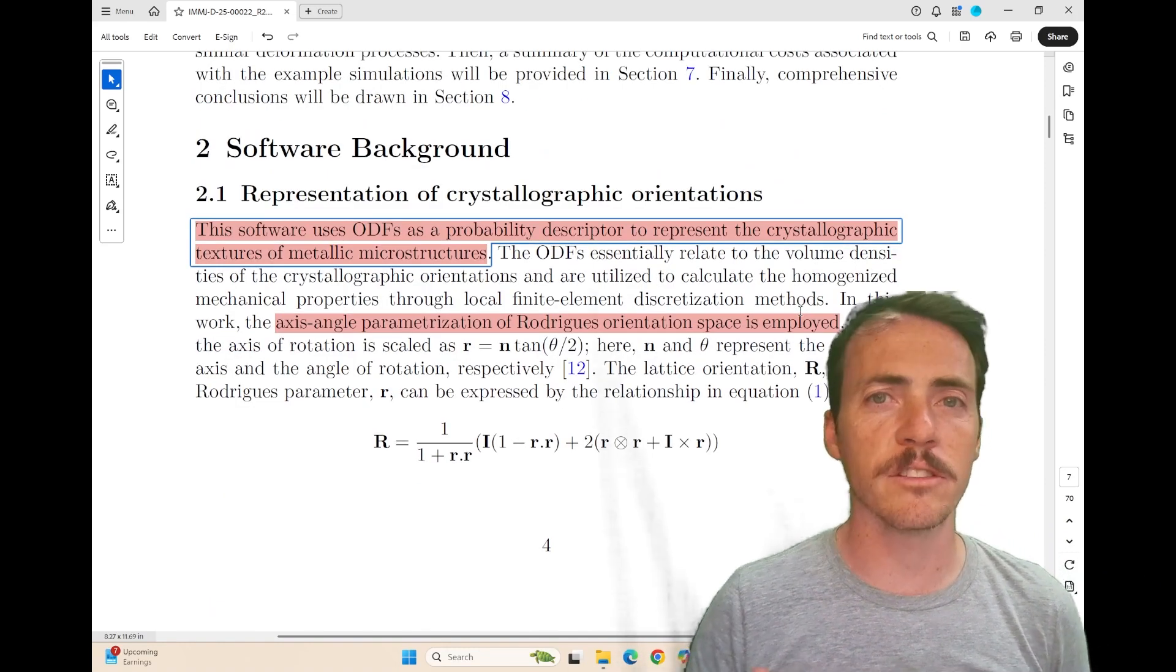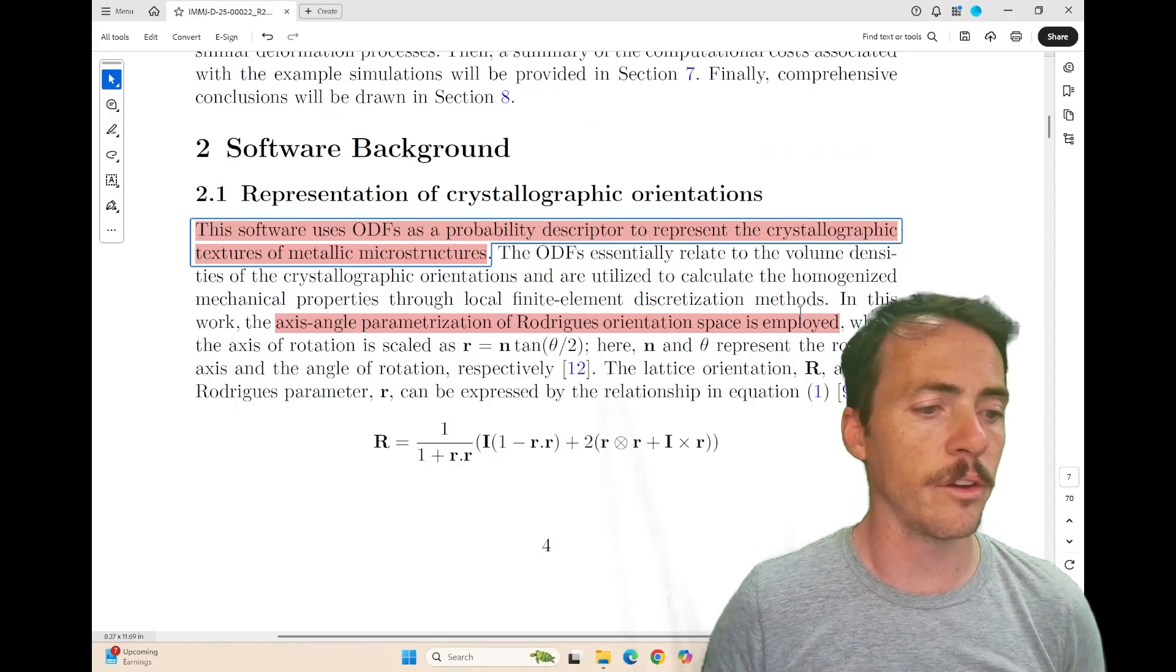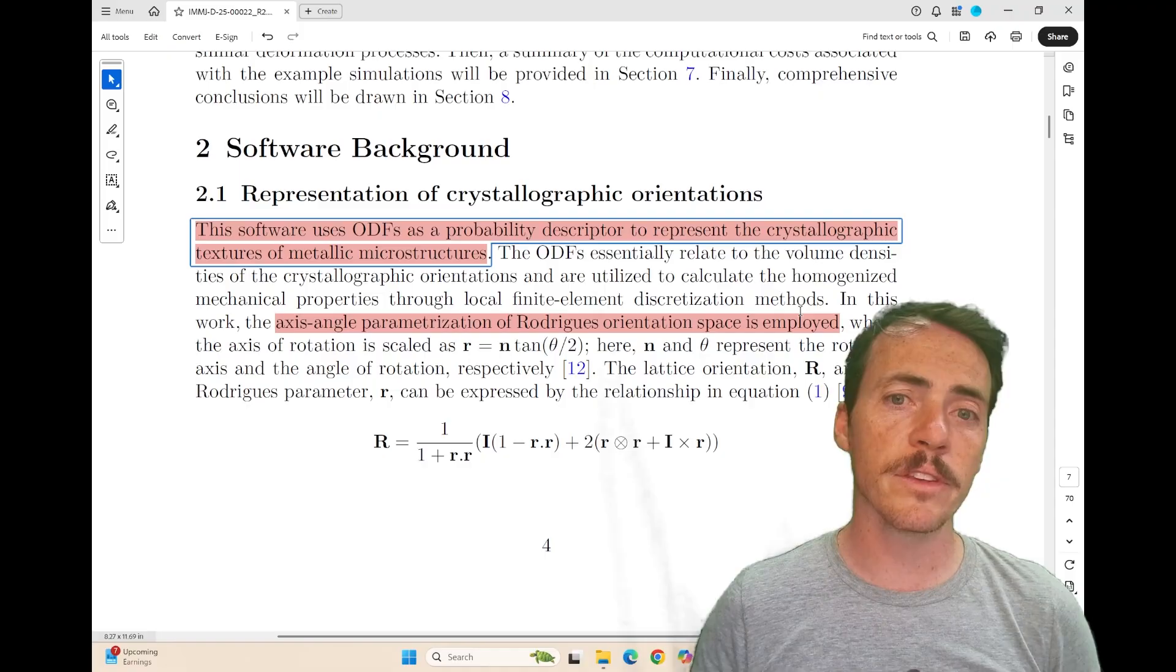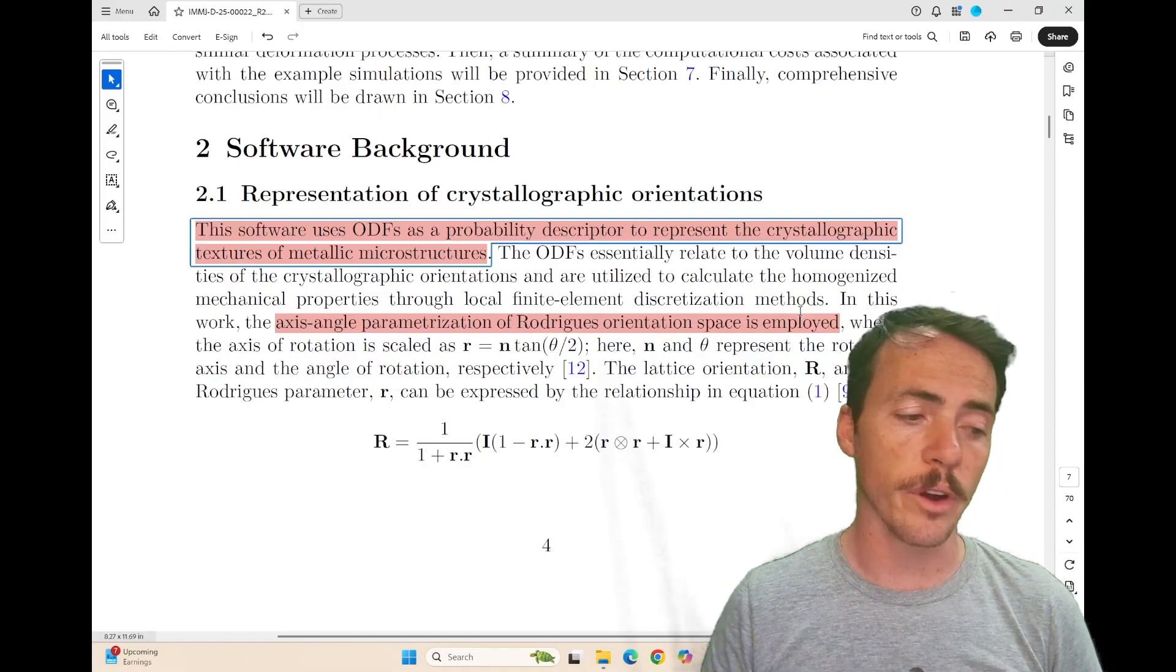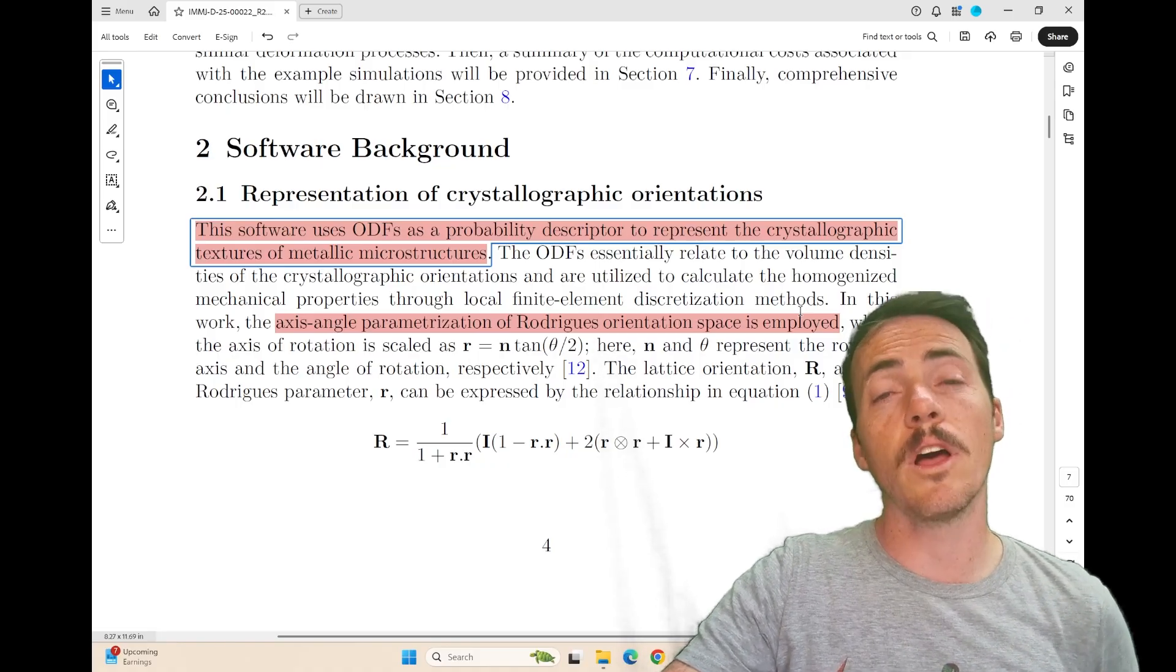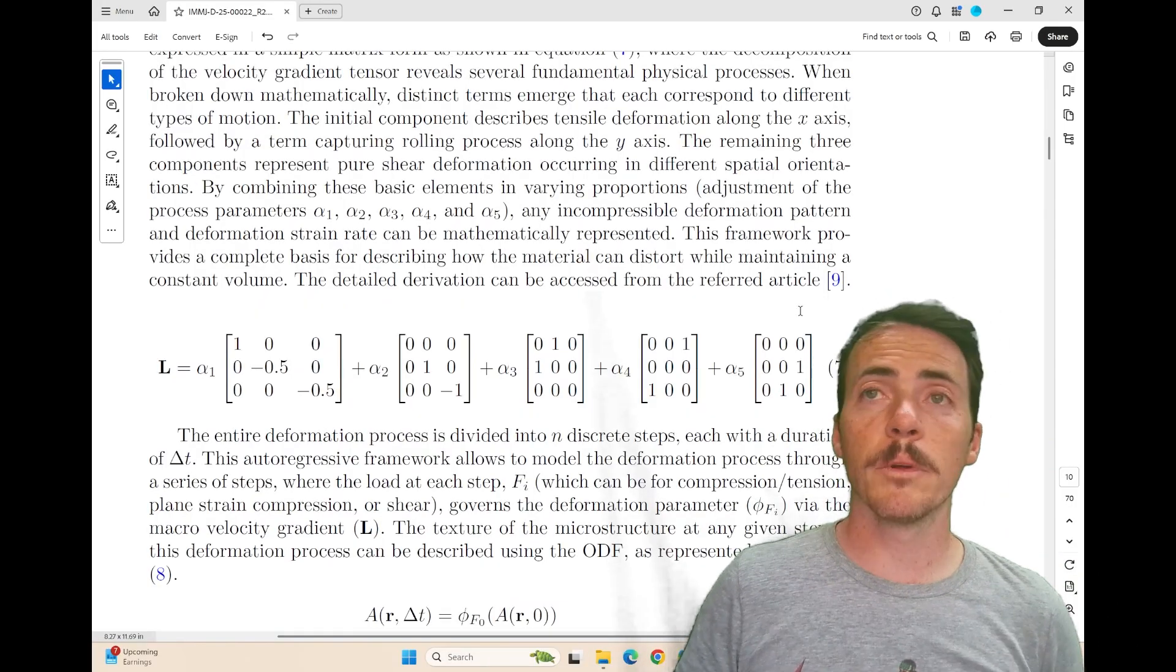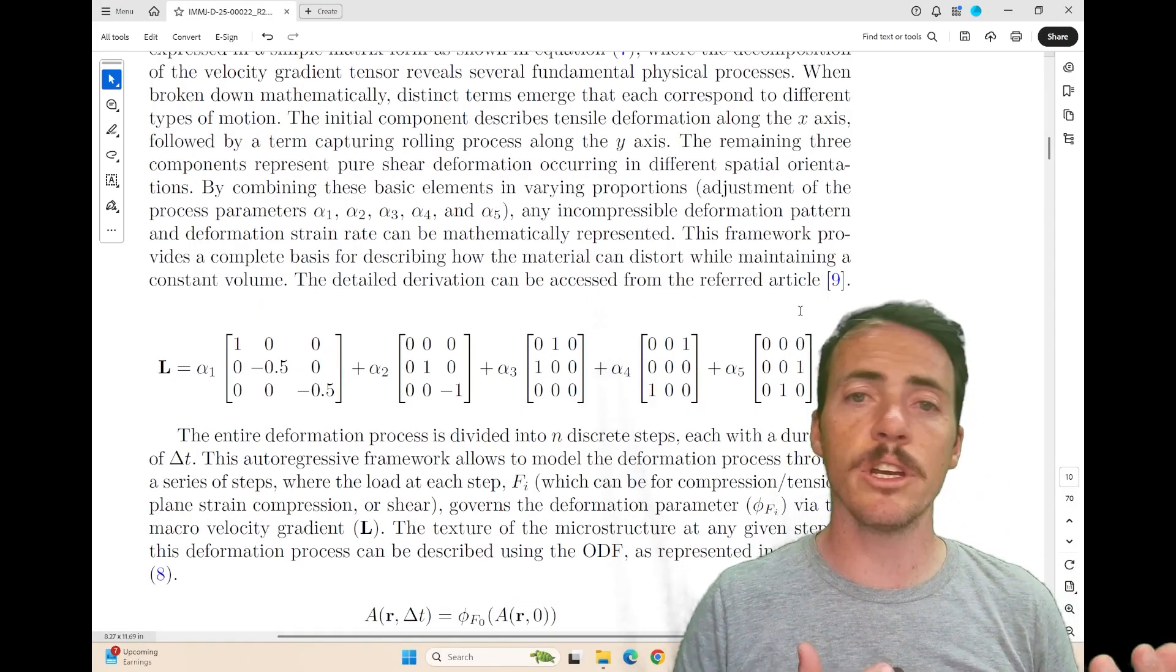When you get into the actual methodology, there are a couple of key assumptions and approaches that they rely on. First is the ODF, obviously, that they're using and the Rodriguez vectors. Another is that they're assuming Taylor's hypothesis, which is essentially saying that there's a uniform velocity gradient across all your grains. They also use lattice spin as the reorientation velocity driver under applied deformation. And the approach is able to model a variety of different mechanical loading from tension, shear, and even rolling.